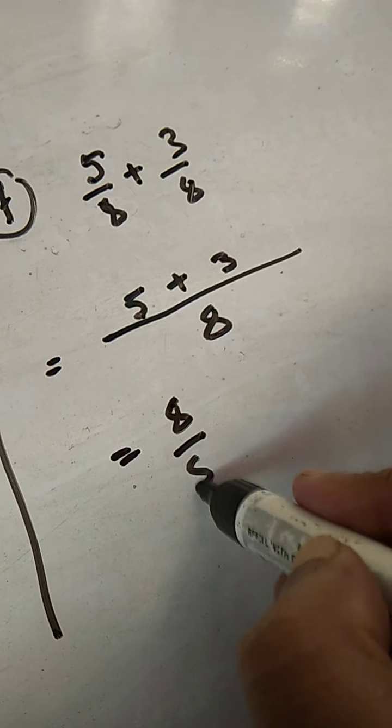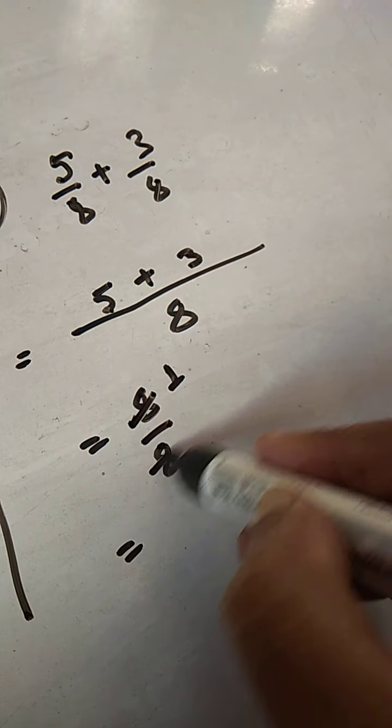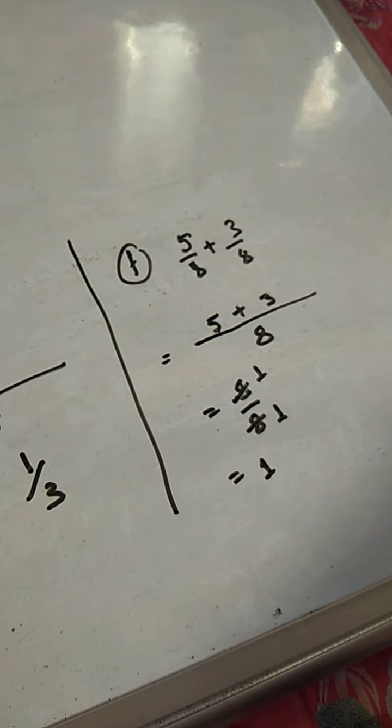That would be 8 by 8 and 8 by 8 means what? If you reduce these two numbers, 8, 8 ones are 8, 8 ones are 8. So, answer is 1.